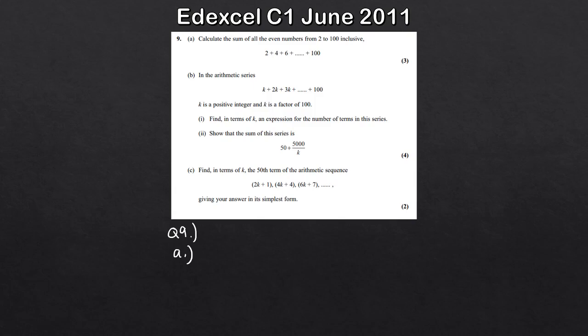We're not expected to work that out by hand - we'll set this up as an arithmetic series. The first term A is 2, the common difference D is also 2 since we're adding 2 each time. The only thing left is how many terms we have: for even numbers from 2 to 100, we have 50 terms. So we're looking for S50.